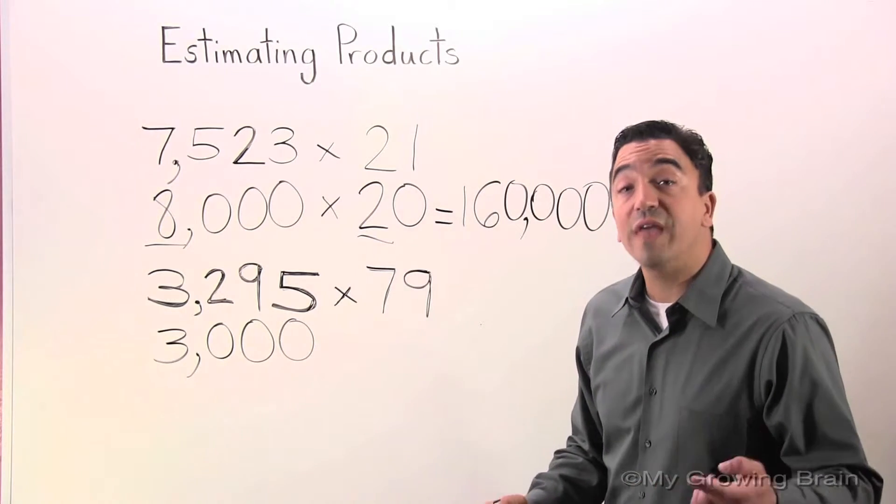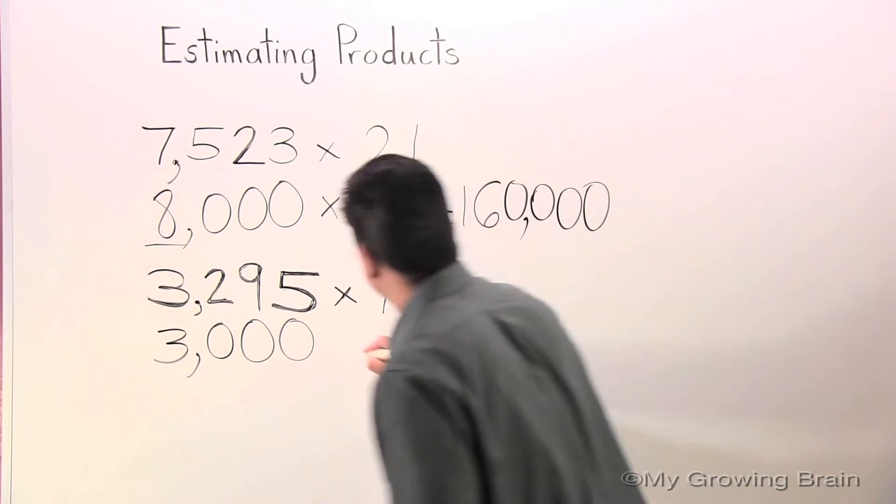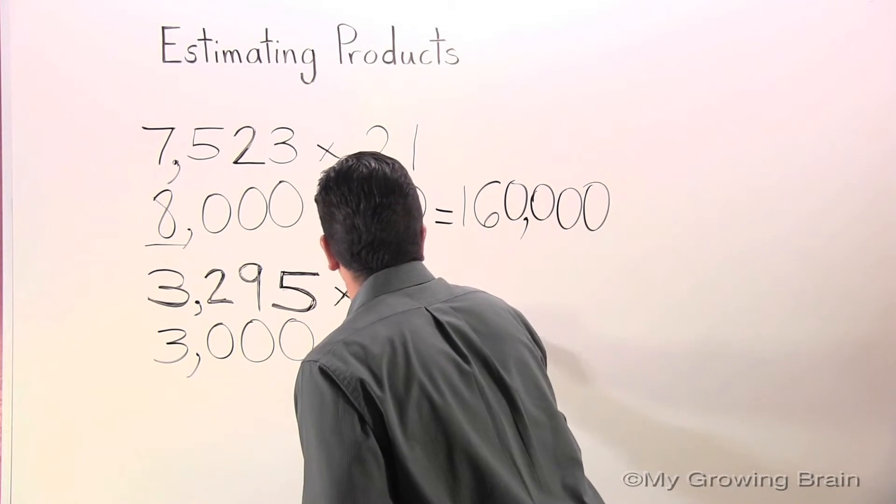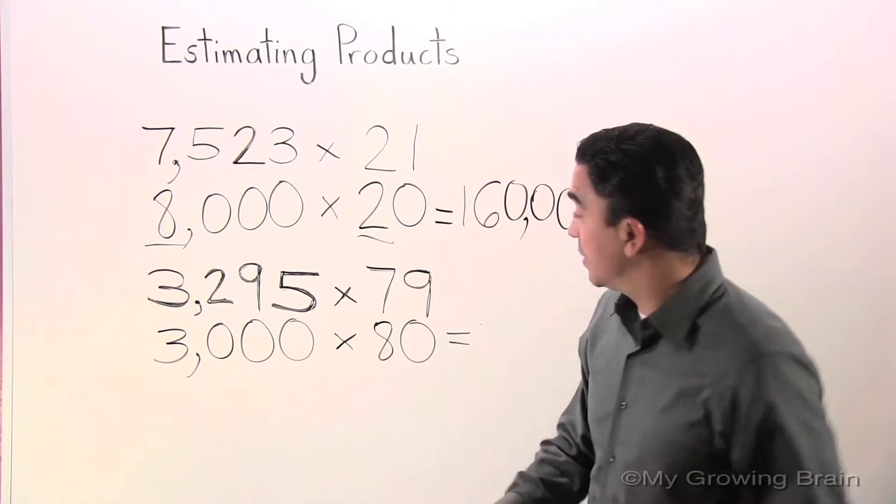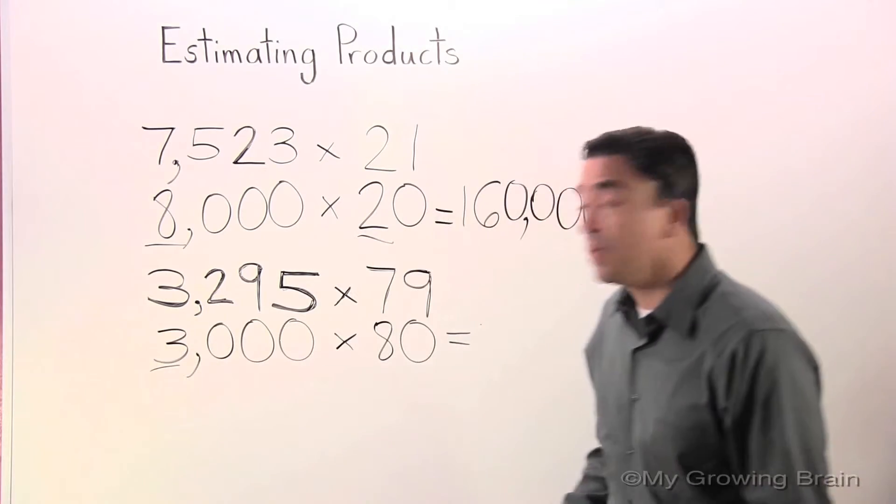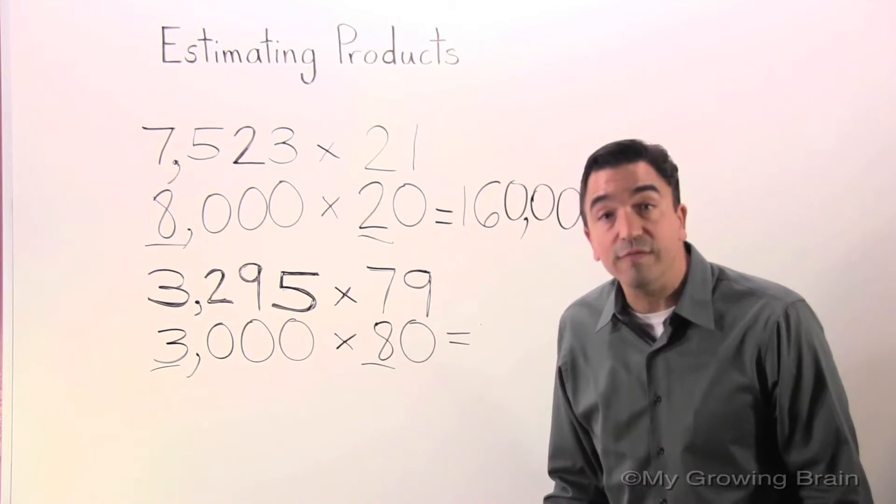79 to the nearest ten is 80. Once again, I'm going to use mental math. 3 times 8 equals 24.